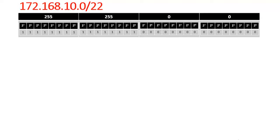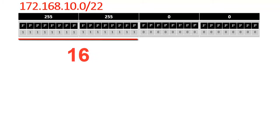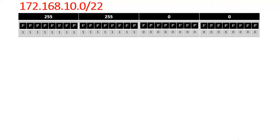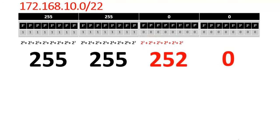In this example the CIDR value is 22, but by default only 16 bits are reserved for the network. To get another 6 bits we have to borrow them from the host part to make it 22. After borrowing those 6 bits from the host, the new subnet mask you will get is 255.255.252.0.